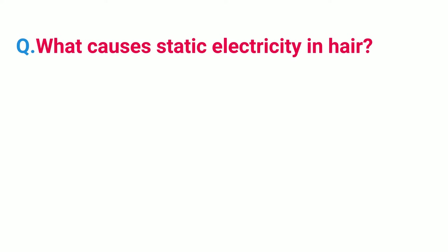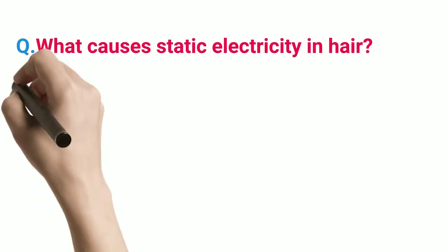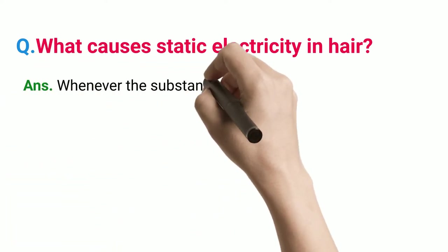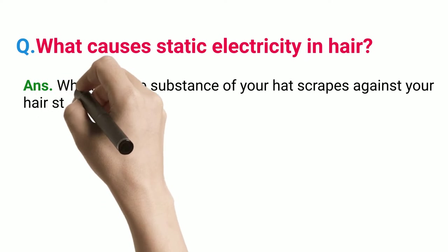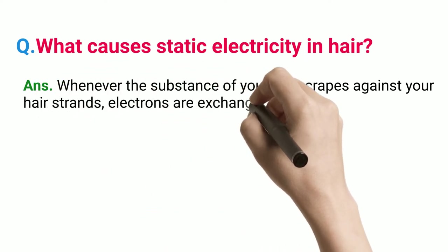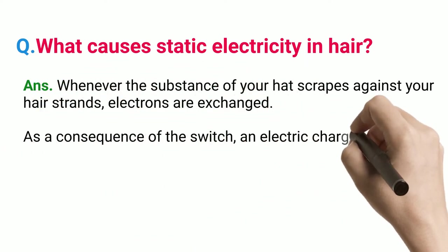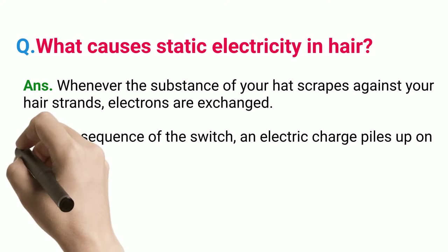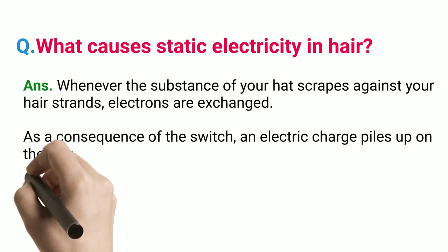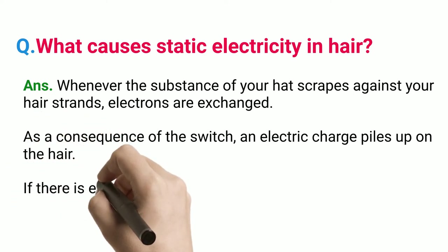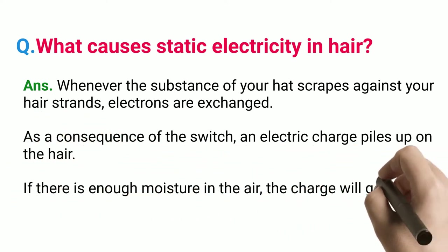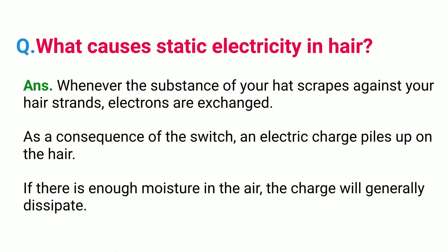What causes static electricity in hair? Whenever the substance of your hat scrapes against your hair strands, electrons are exchanged. As a consequence of the switch, an electric charge piles up on the hair. If there is enough moisture in the air, the charge will generally dissipate.